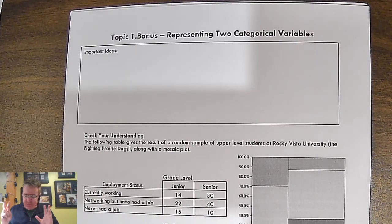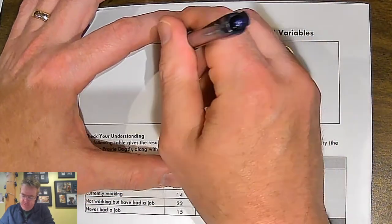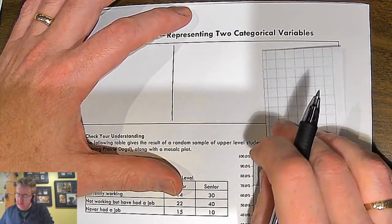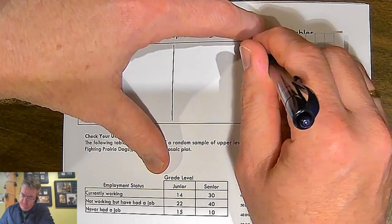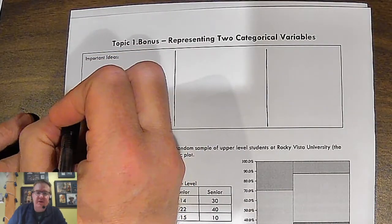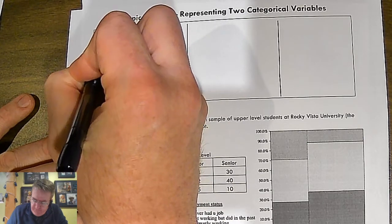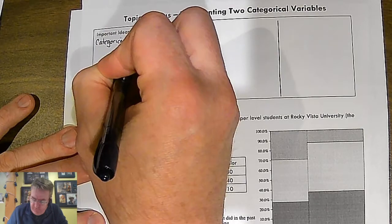All right. So we've got three different topics here that we're going to hit. So I'm going to break these down. Okay. So important idea number one, categorical versus quantitative.